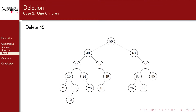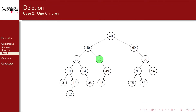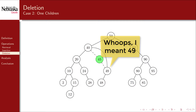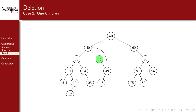Here's another case: let's delete 45. Once we've found it, we observe that it has only one child — a right child in this case. We cannot simply remove it, as the subtree rooted at 49 would then be pruned and all data lost. However, we can easily preserve it by promoting it up to where 45 currently is, shuffling a couple of references to make 49 the new right child of 40. This is very similar to a delete operation in a linked list.